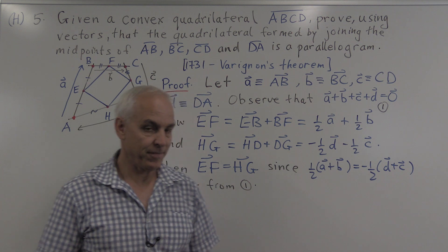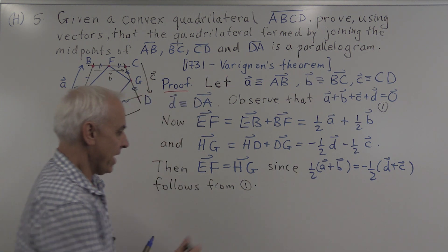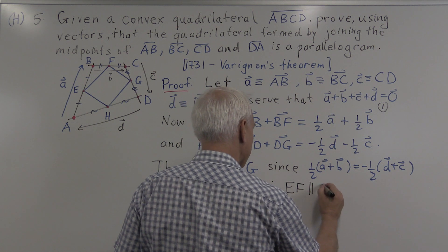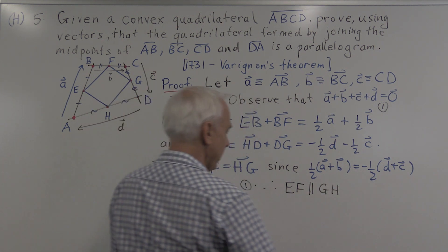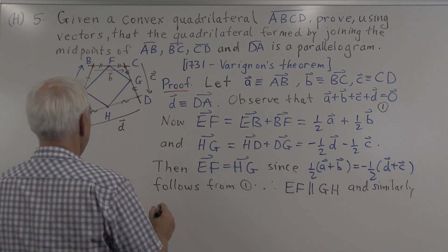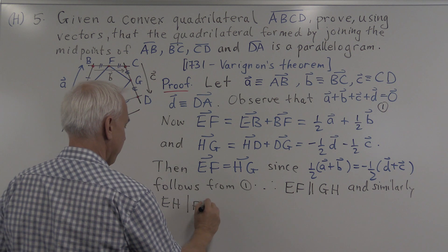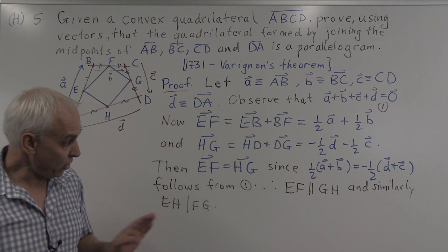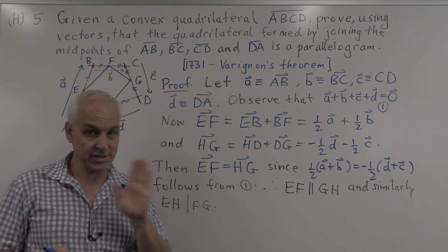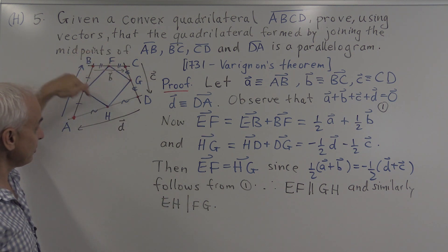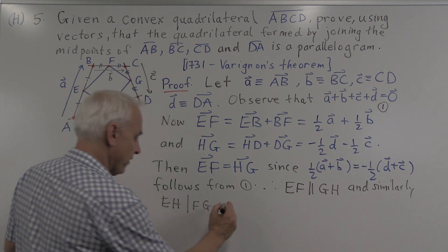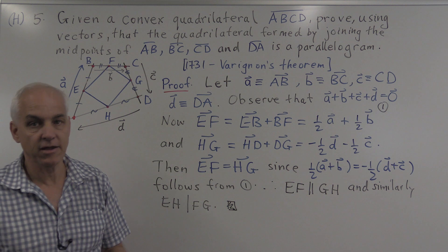We conclude that line EF is parallel to line GH, and similarly EH is parallel to FG. In fact, once we've established that these two sides are equal as vectors, this is automatically a parallelogram, because it then follows that the other two sides are also equal as vectors. That's the end of the proof of Varignon's theorem using vectors.